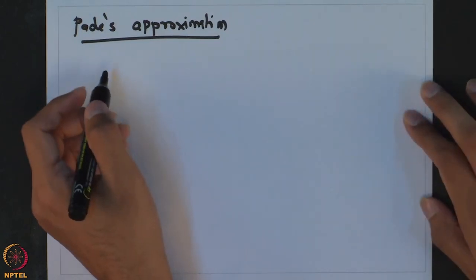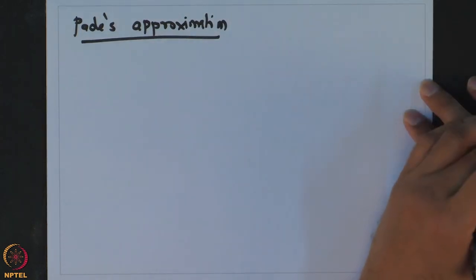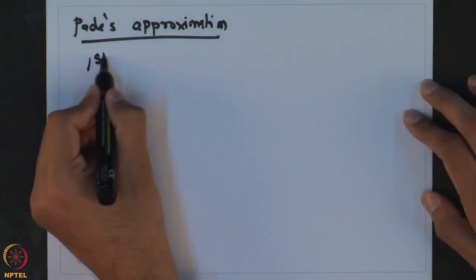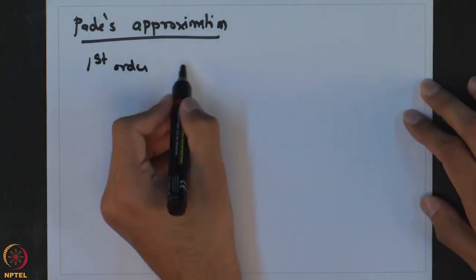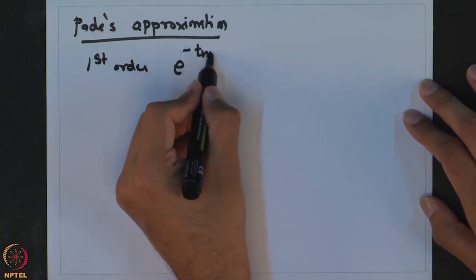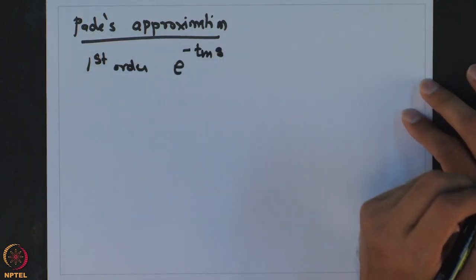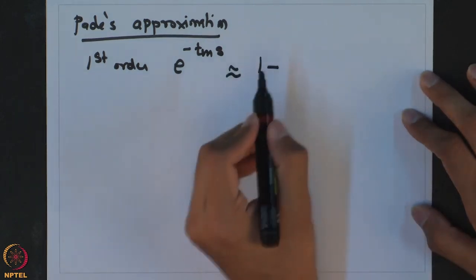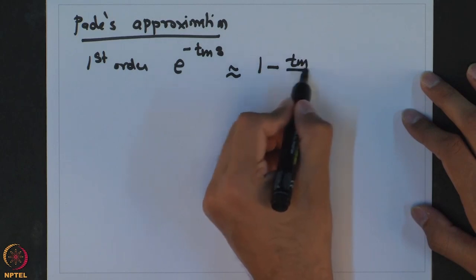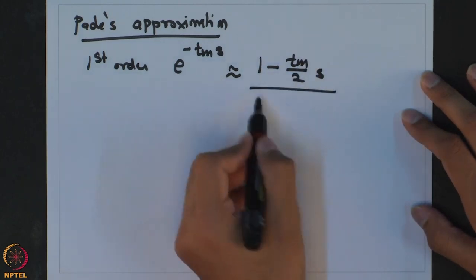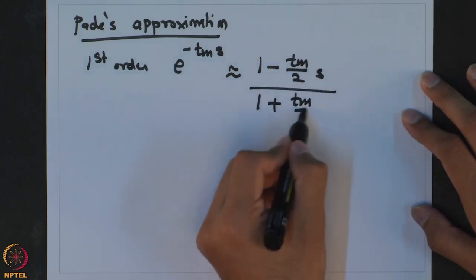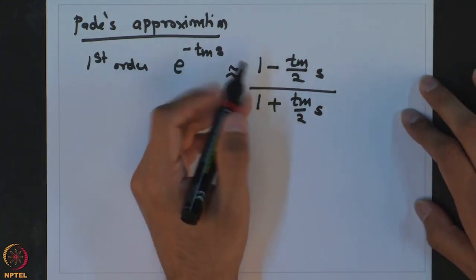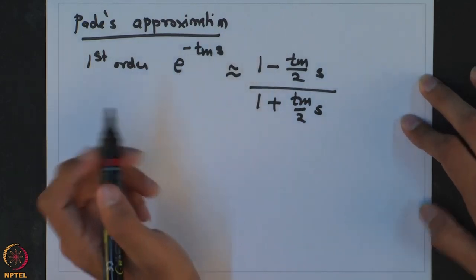The Padé approximation can be of different orders. Very commonly, we use the first-order Padé approximation, which says that a pure delay transfer function e^(−Tm·s) can be approximated as (1 − Tm/2 · s) / (1 + Tm/2 · s). This splits the contribution of the delay into numerator and denominator dynamics.